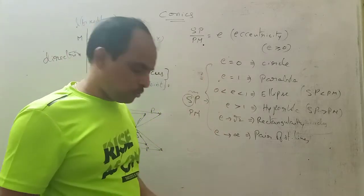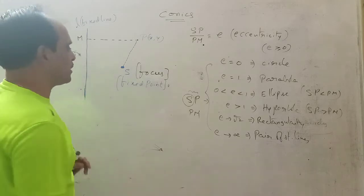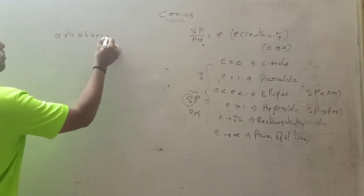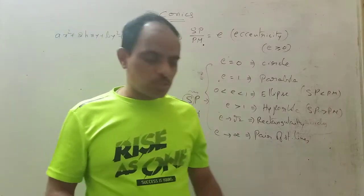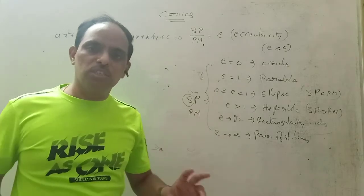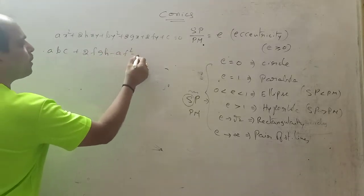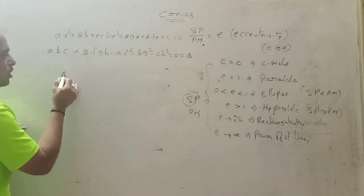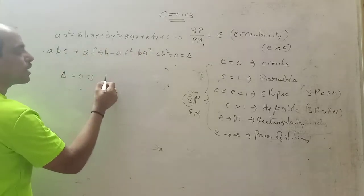Now let's discuss the general form of the conic. The fixed point is the focus and the fixed line is the directrix. The general second-degree equation is: ax² + 2hxy + by² + 2gx + 2fy + c = 0. This is called a non-homogeneous second degree equation. The discriminant delta is defined as: abc + 2fgh − af² − bg² − ch².